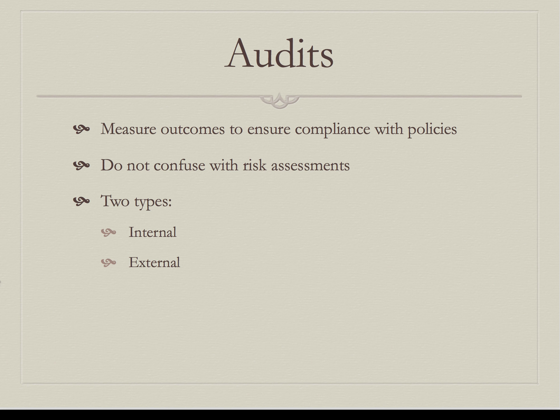Audits measure outcomes to ensure compliance with policies — they are not risk assessments. Risk assessments try to determine risk; audits try to determine compliance with policy. There are two types of audits: internal and external. Internal audits are typically done by an internal audit team. Many smaller companies do not have internal auditors, and many can't afford external audits, so audits are often never performed by third parties for financial reasons.